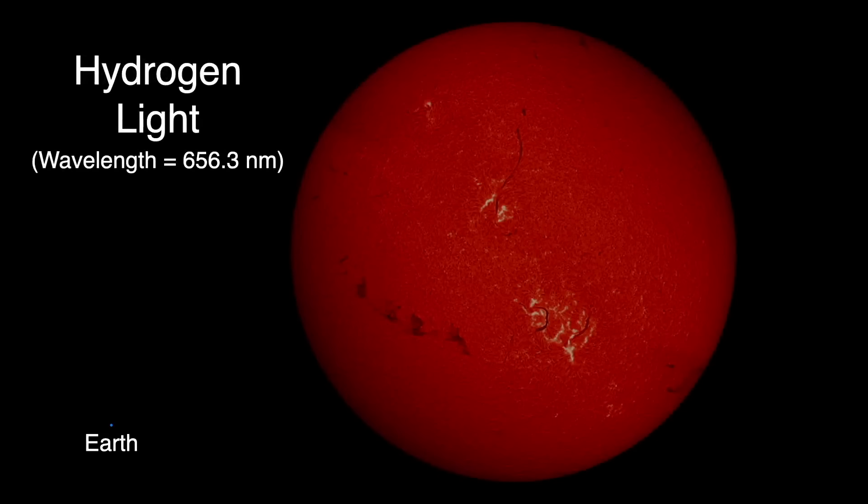If you looked at the sun in the red light given off by hydrogen, you'd get a different picture, telling you a whole new set of information. We'll also be webcasting the sun seen this way by using a special filter that only allows through a very, very narrow color range only given off by hydrogen atoms in the solar atmosphere.